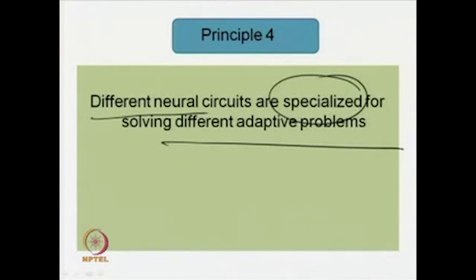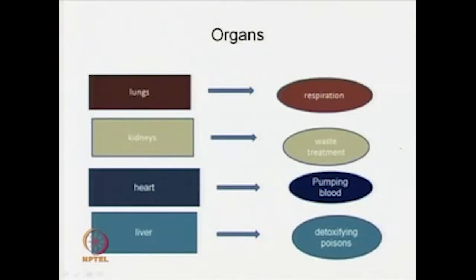Evolutionary biology is very important as the template from which evolutionary psychology draws its methodology. If you look at the human body, the liver is meant for detoxifying poisons and does not pump blood; lungs are for respiration, kidneys for waste treatment, the heart for pumping blood, and the liver for detoxification. Just as our body has different circuits — the organs like lungs, kidneys, heart, and liver — to perform specialized jobs, it is held that our brains have circuits which are specialized to perform certain jobs.